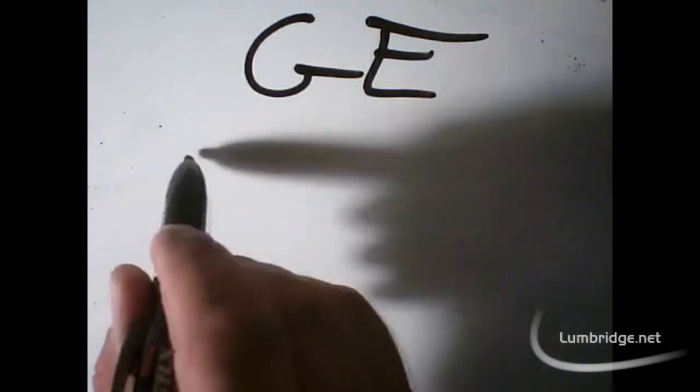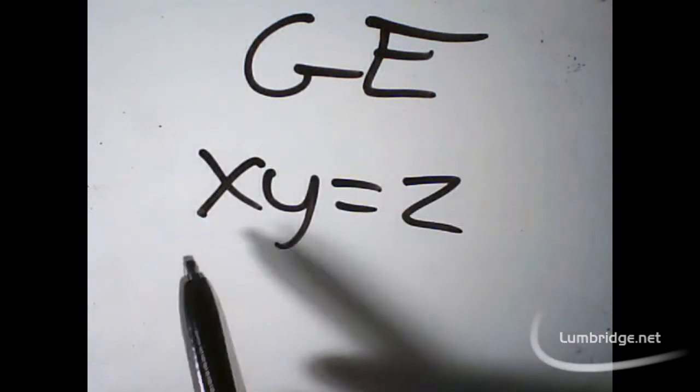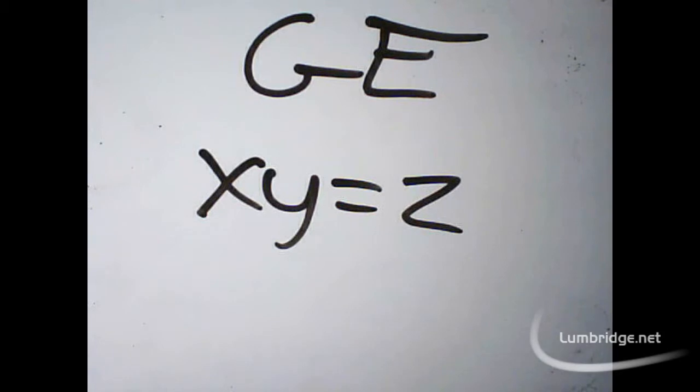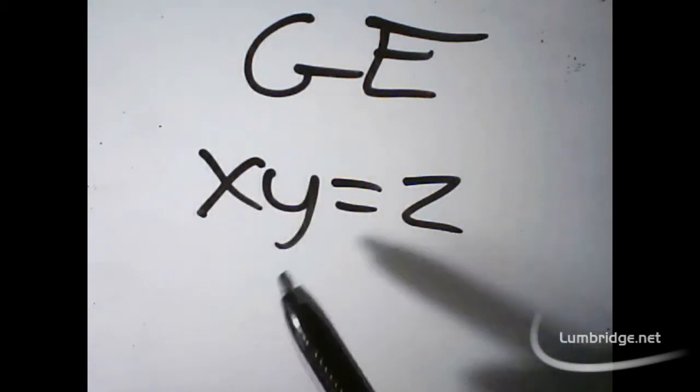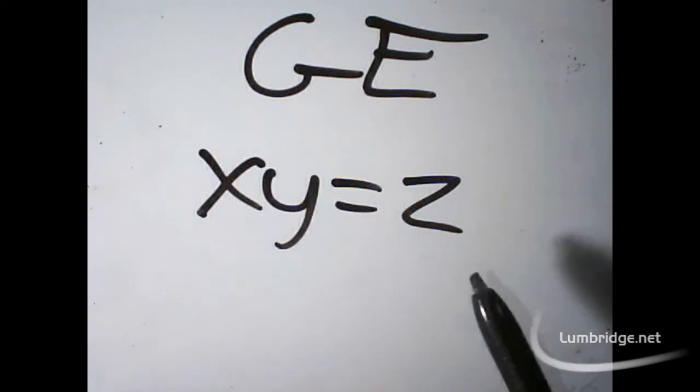For example, if you go to the Grand Exchange and you want to buy something, it's using algebra. And generally, it's a simple x, y, z. X times y equals z. What do I mean by this? Well, this is pretty basic algebra. It's where you have a few variables, where, say, x is the price, y is a quantity, and z is the total amount.